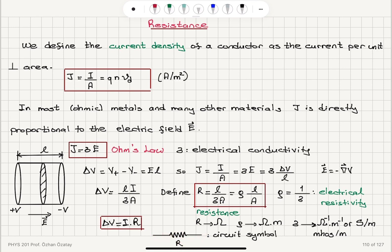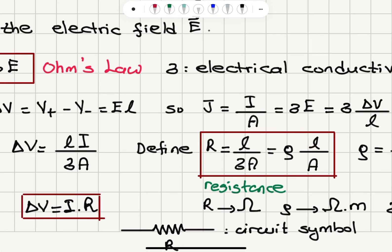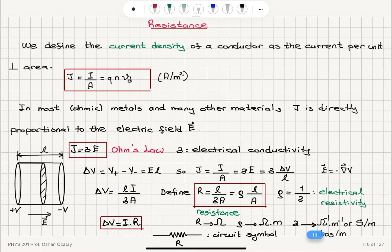Resistance has the circuit symbol shown here and is measured in ohms. Resistivity is measured in ohm·meters. Electrical conductivity is measured in ohm-inverse per meter, or Siemens per meter, or mhos per meter.